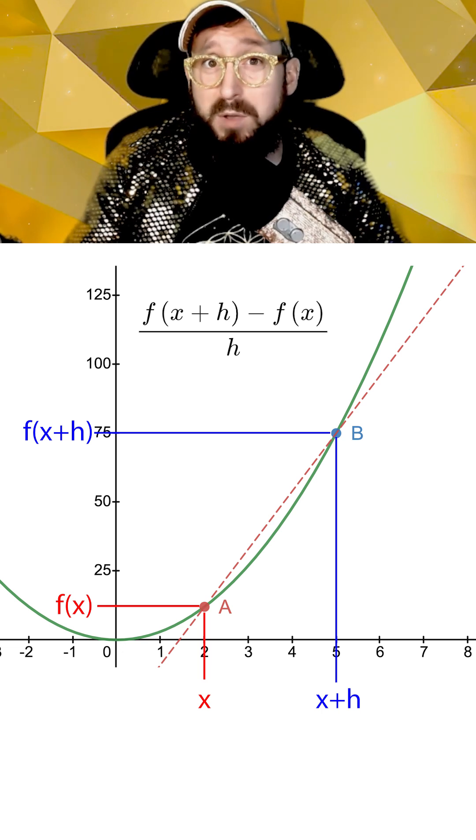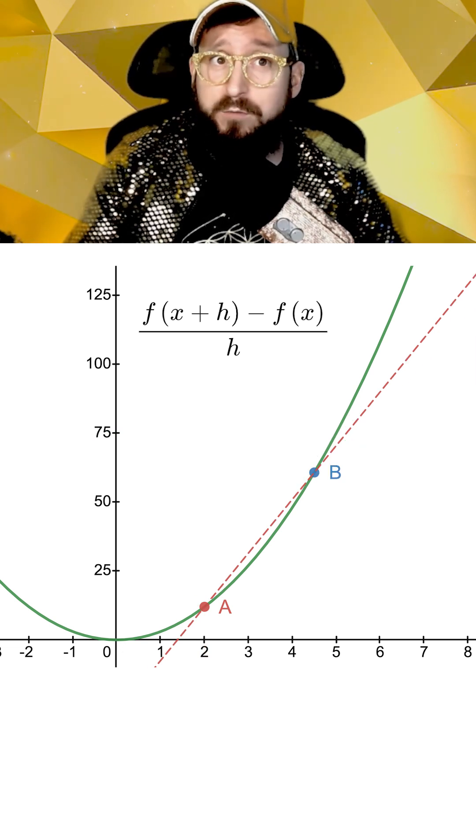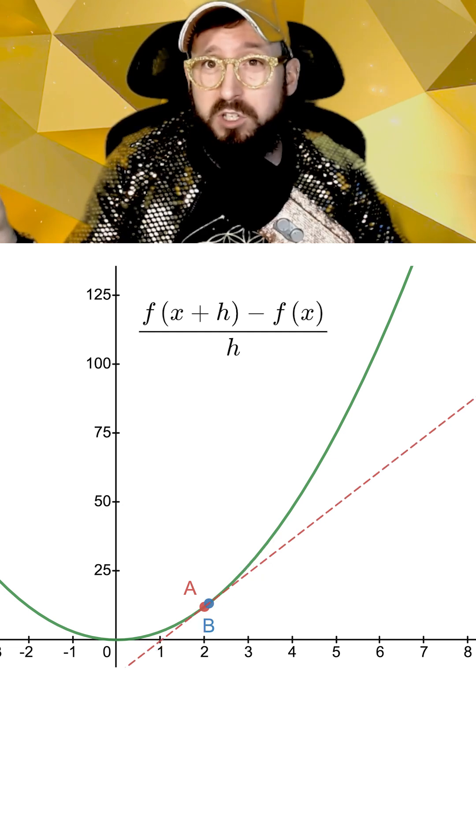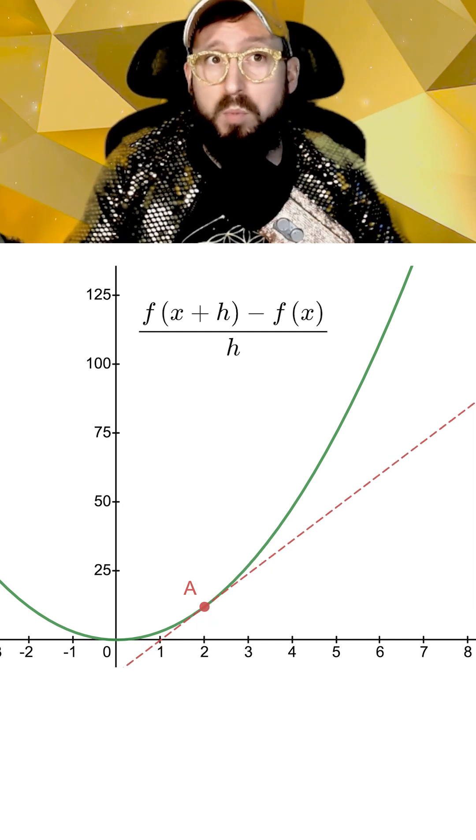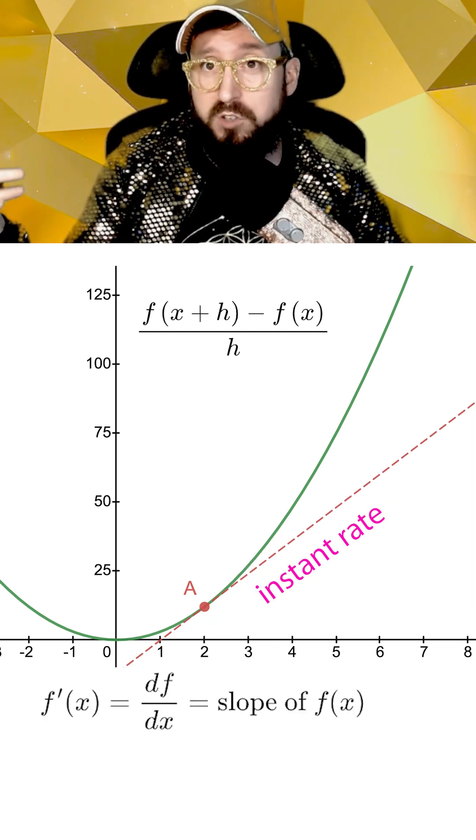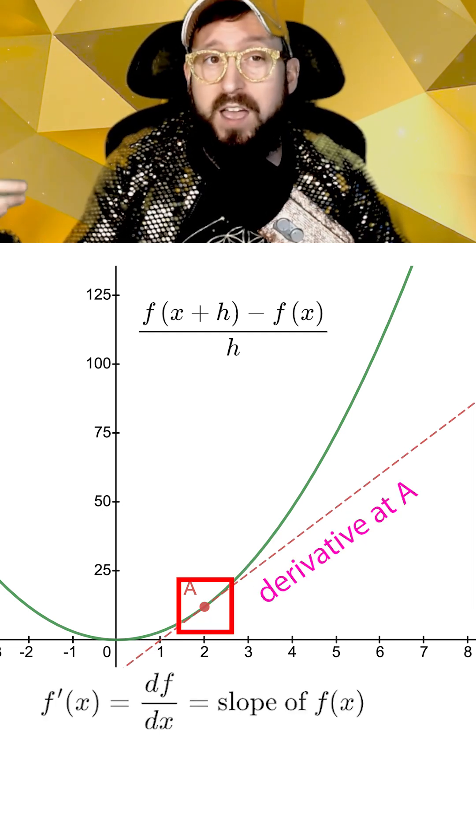One way to get a better estimate of the slope at point a would be to move the point b closer to a. If we did this until a and b were right next to each other, now our formula would give us the slope of the tangent line at a, which is also the instantaneous rate of change and the value of the derivative at point a.